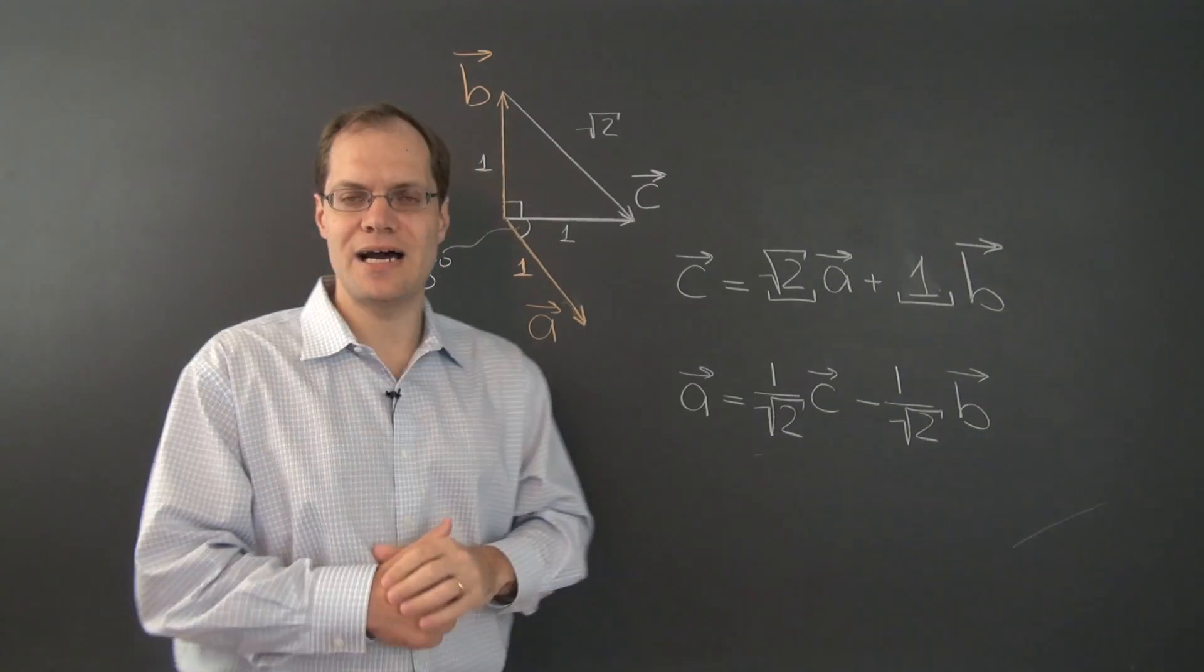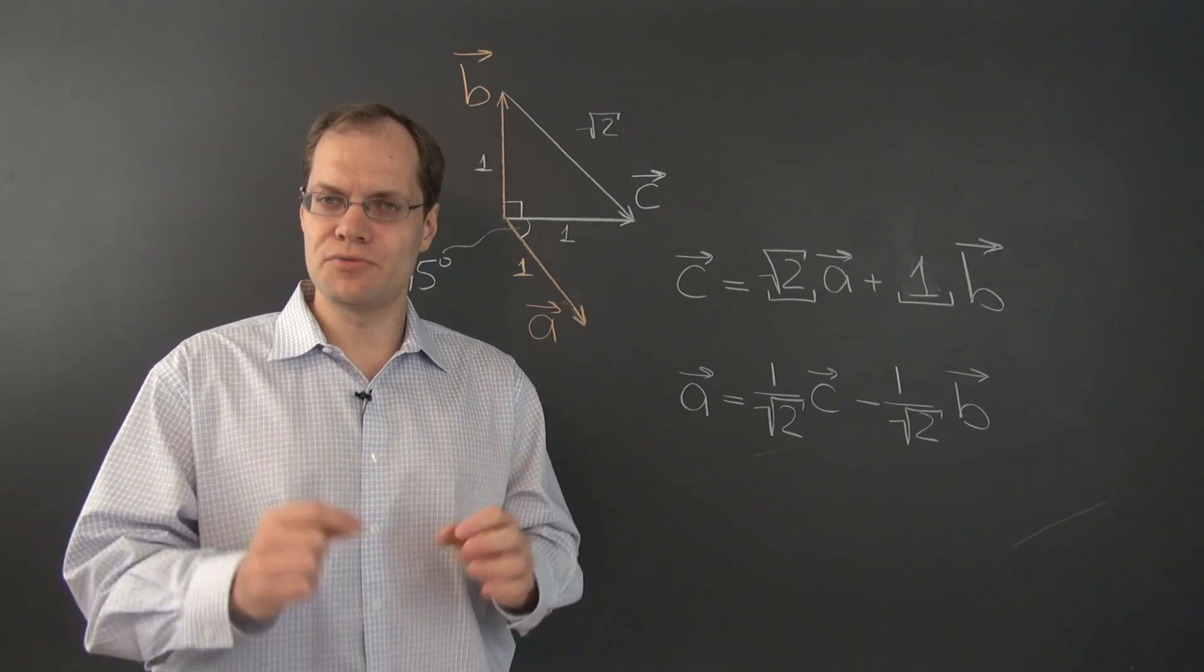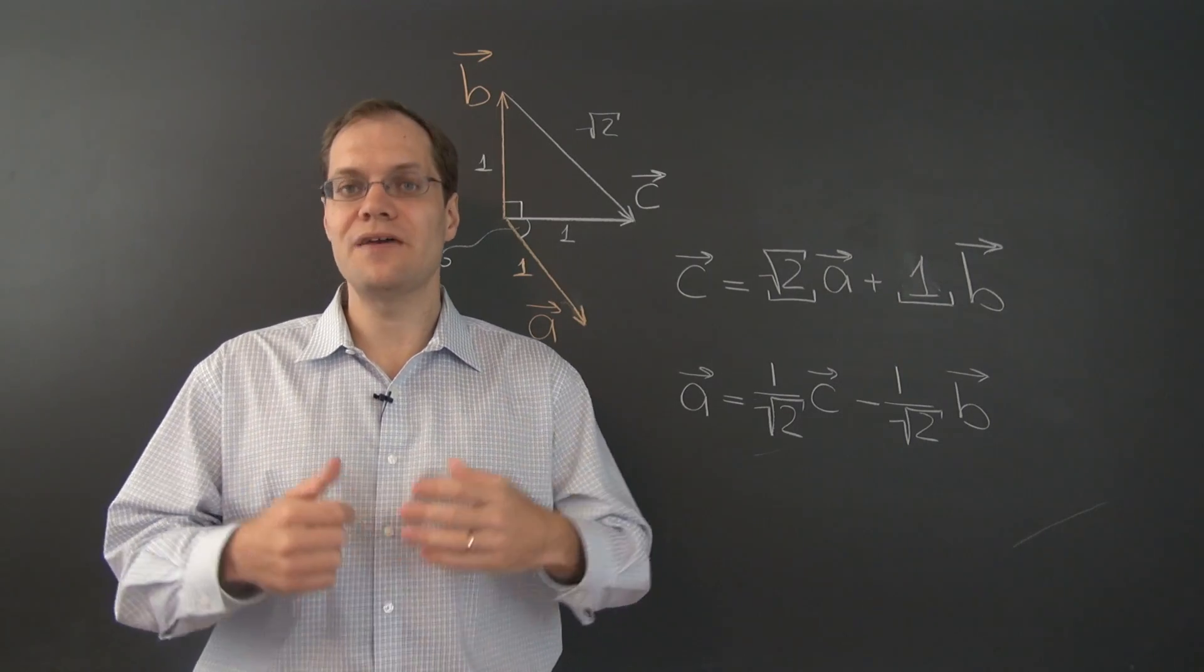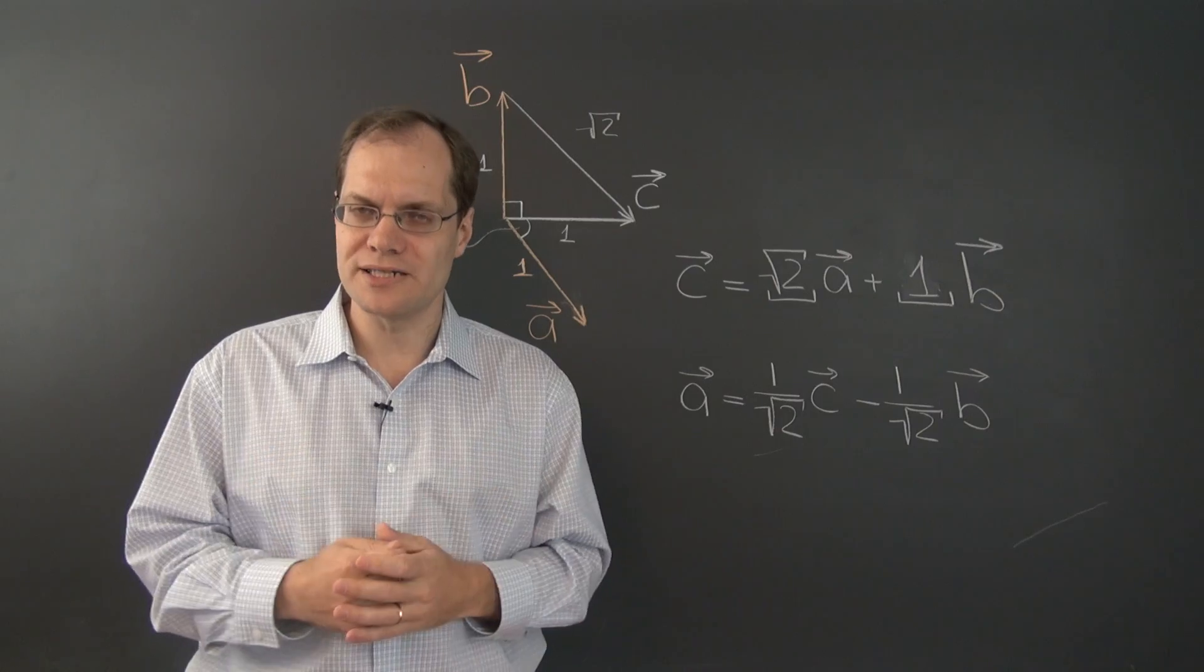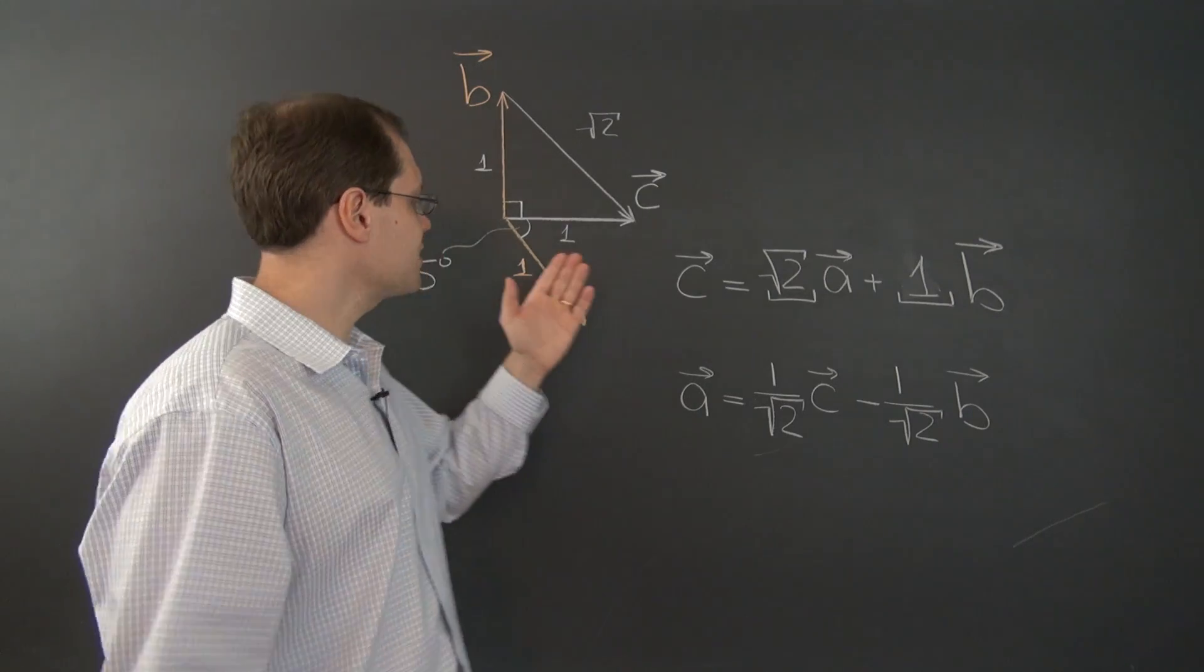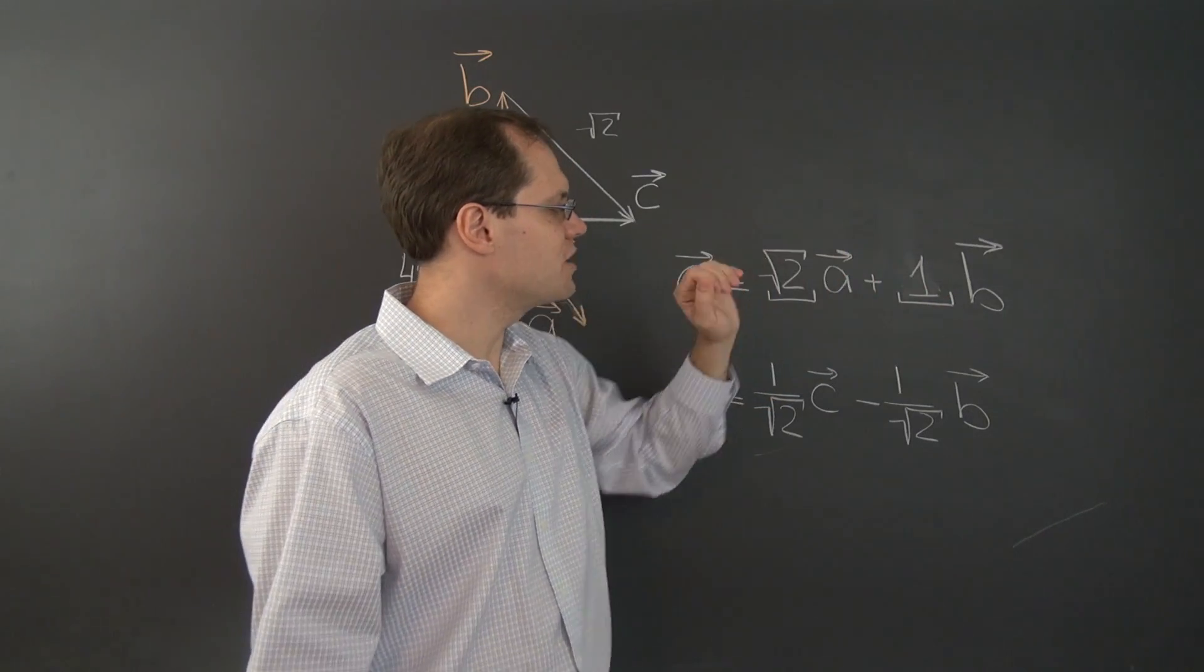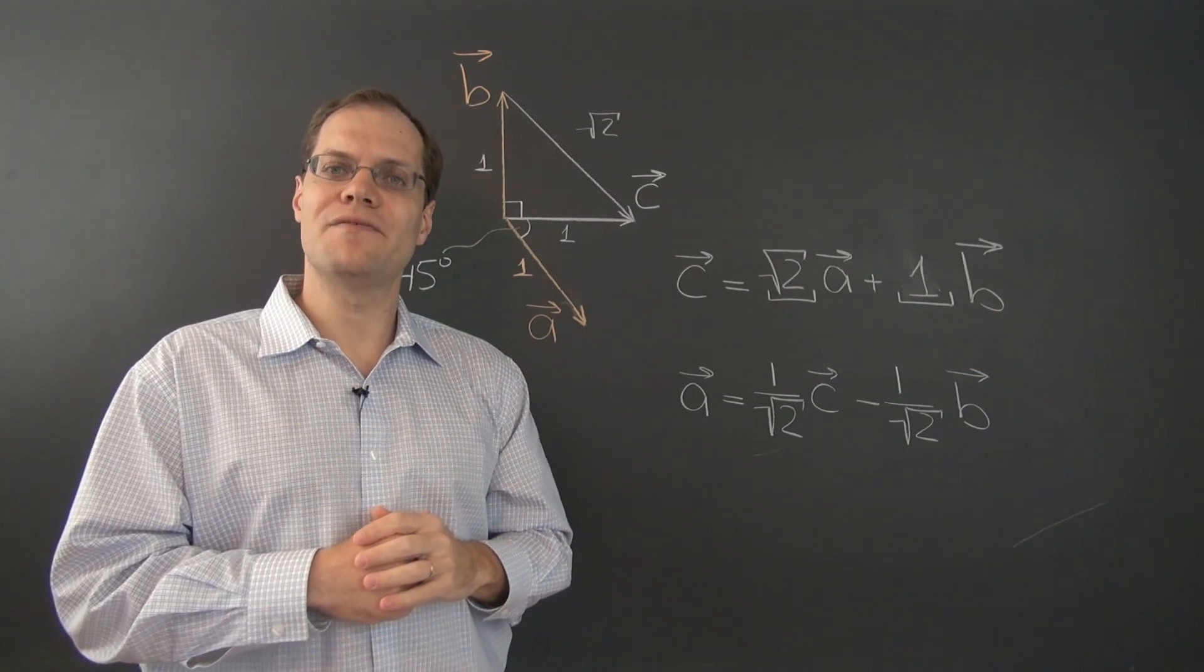This was our final example of decomposition that can be done by sight, by taking advantage of the special arrangement of the vectors that were given. So now it's time to consider a more general situation and to ask the question, what will you do if the vectors are not arranged in any special way? What we're looking for is something robust, something very systematic, something that you can use in any situation for any vectors A and B and any third vector C to have a systematic way of identifying the coefficients so that if you combine A and B with those coefficients in a linear combination, the result would be C. That's the topic of the next video.